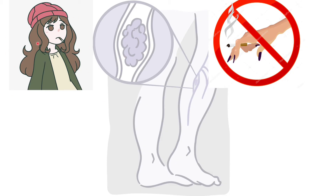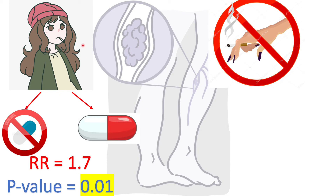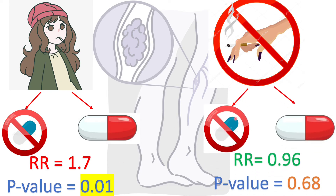Among the women who smoke, there were more cases of DVT in those who took the pill than those who did not — the results are significant, with a p-value below 0.05. On the other hand, among the non-smokers, those who took the pill and those who did not showed really no difference in the number of DVT cases. There is no difference if you are a non-smoker, whether you took the pill or not. The relative risk is almost 1, and the p-value is high, meaning it's not significant. However, if you are a smoker, there is a difference.